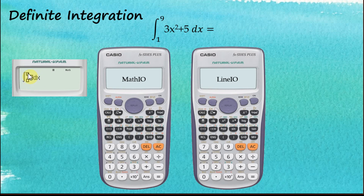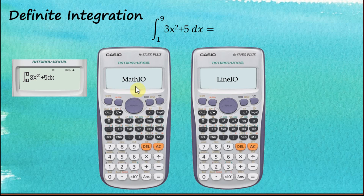The function is 3x² + 5, so we enter 3 alpha x square plus 5. After that, we use the right button to move to the second container and enter the lower limit: one. Then the upper limit: nine. Press equal, and this is the answer.